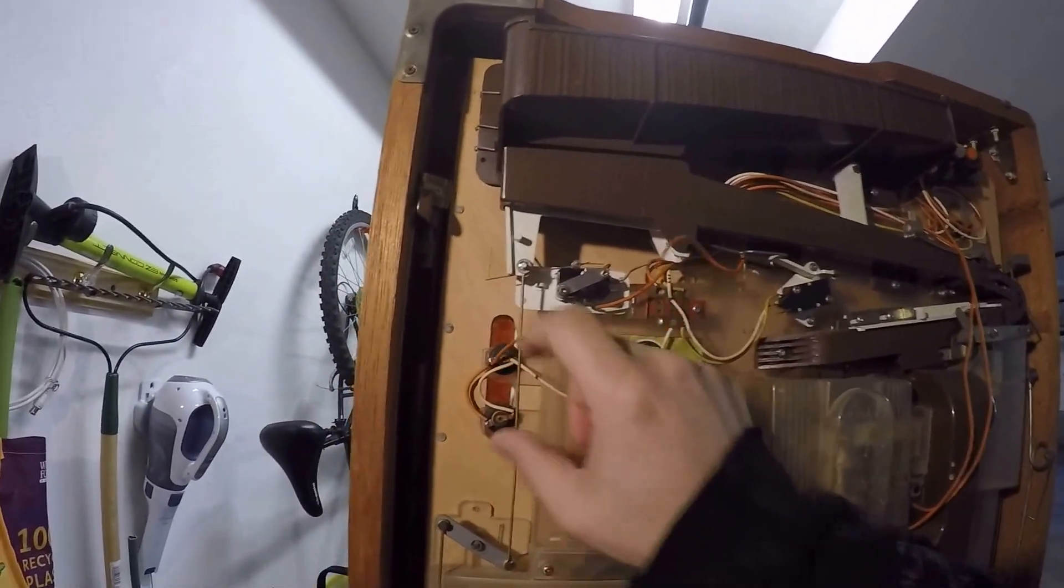One light will say when both of them are on, that means it's completely full. When one of them is on, it's half full. And when they're both off, that means there's nothing left. So, let's start looking at this electric system.